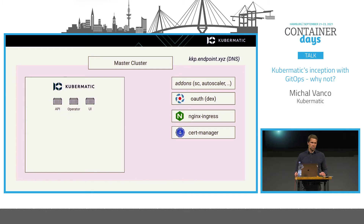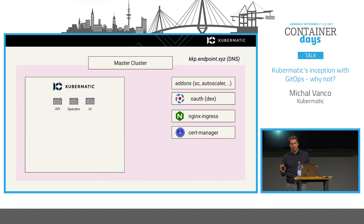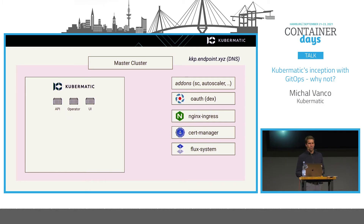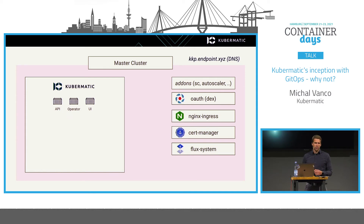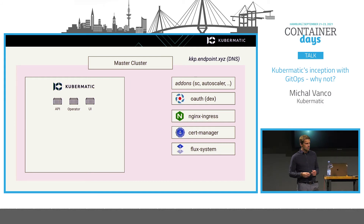The automatic DNS management only works if your AWS cluster and hosted domain are in one account in Route 53, so it has limitations in more complex environments. At this point you have Kubermatic but nothing inside. Then we bootstrap Flux — it gets installed inside the flux-system namespace. You provide the Git repository, and Flux installs itself, managing itself in the GitOps way.